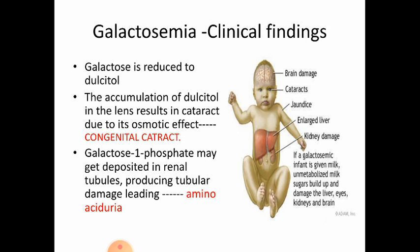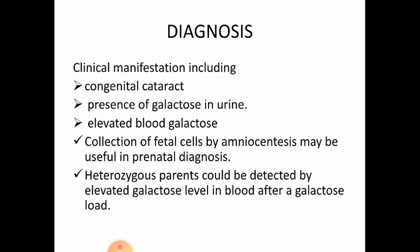This condition is called congenital cataract. One of the main features is congenital cataract due to the conversion of excess galactose to dulcitol, which accumulates in the lens. Galactose-1-phosphate may also be deposited in the renal tubules, producing tubular damage and leading to aminoaciduria.